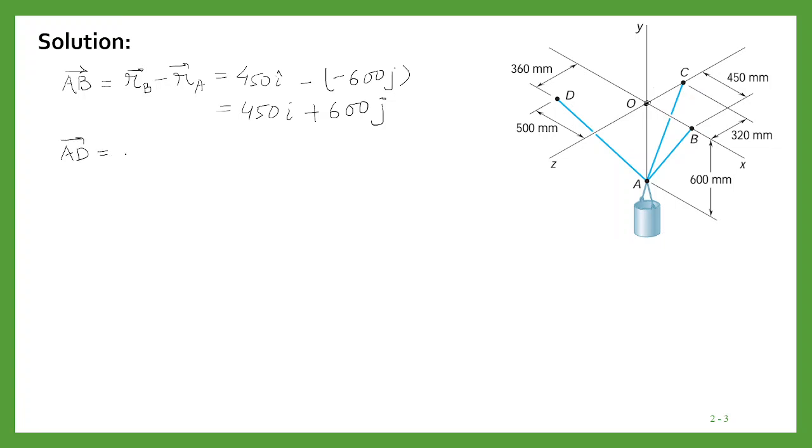So we can say that AB will be equal to 450i plus 600j. Similarly, we will be calculating AD. AD will be equal to the position vector of D minus the position vector of A.